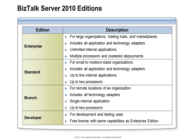BizTalk Server 2010 comes in four different editions. The first is the Developer edition — the keyword here is free. It's available as a download from the Microsoft website, can be used for development and testing purposes, and contains all the features of the Enterprise edition. Next is the Branch edition, which is what you'd need if a remote location or branch office needed to communicate information back to your main BizTalk group. It includes all the network protocol adapters such as HTTP and FTP, makes use of up to two processors, but requires all components to be grouped into a single BizTalk application.